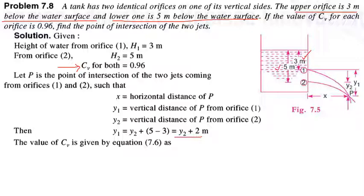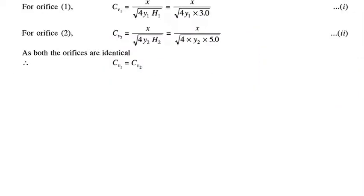From the CV equation, CV = x / √(4·y·h). So CV1 for orifice 1 is x / √(4·y1·3), where h1 = 3. CV2 for orifice 2 is x / √(4·y2·5), where h2 = 5. We don't yet know y1 and y2, but since both orifices are identical, CV1 = CV2.